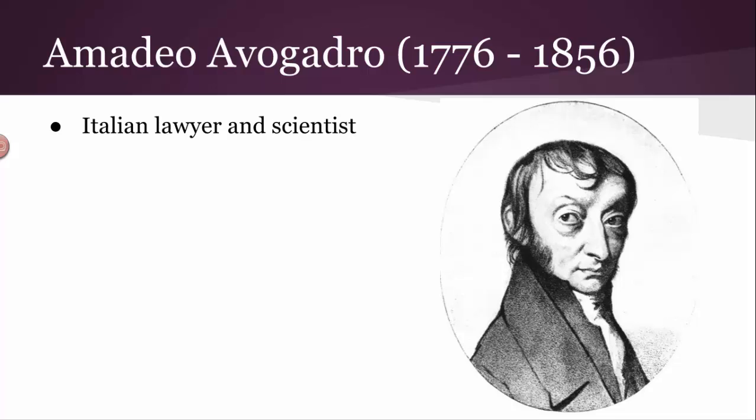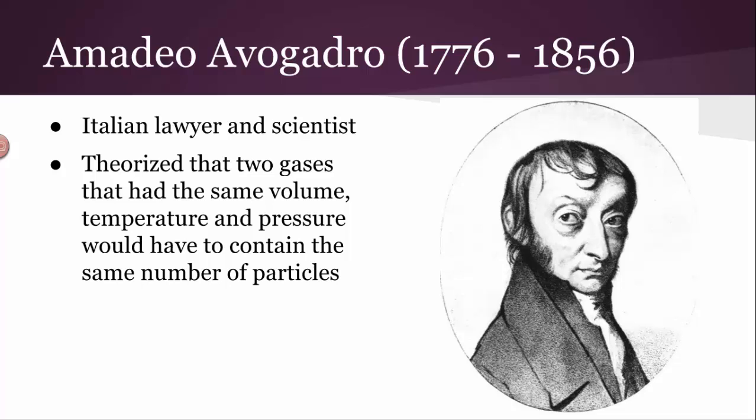Avogadro was a lawyer, but he was also very interested in mathematics and science, and he built himself a lab and began to experiment with gases. He came up with a very important idea. It's now called Avogadro's Hypothesis. He said, if you have two containers of gas, two different gases, and the gases have the same volume, and they have the same temperature and pressure, then they will contain the same number of particles.